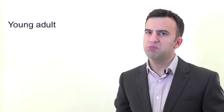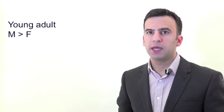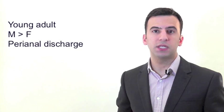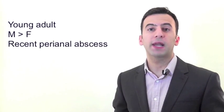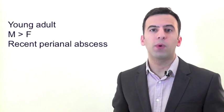The history will often be somebody aged roughly 30-40, and nearly twice as likely to be male than female. He or she might complain of persistent discharge from around the anus, and often following a perianal abscess that may have been formerly incised and drained some weeks ago.